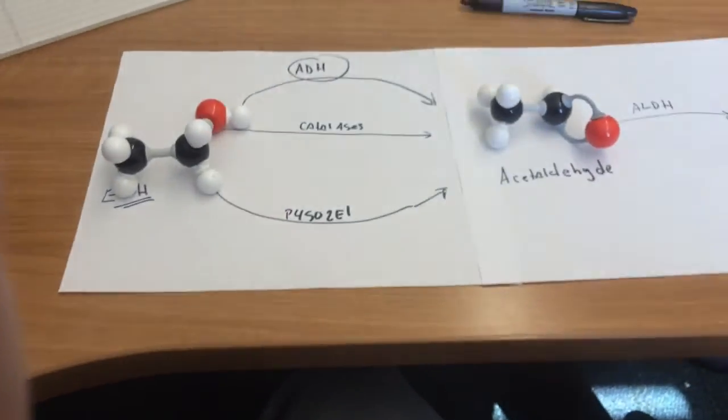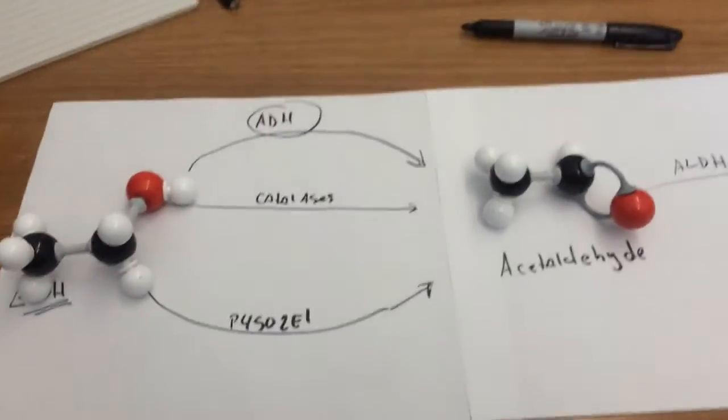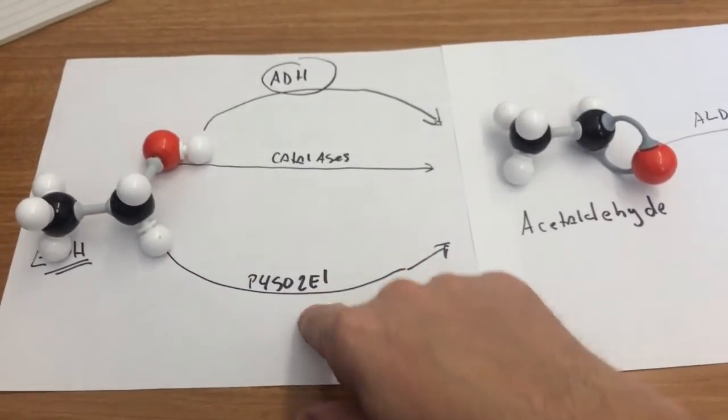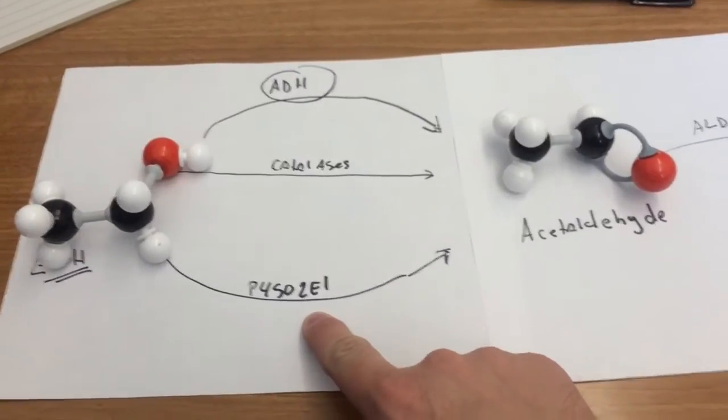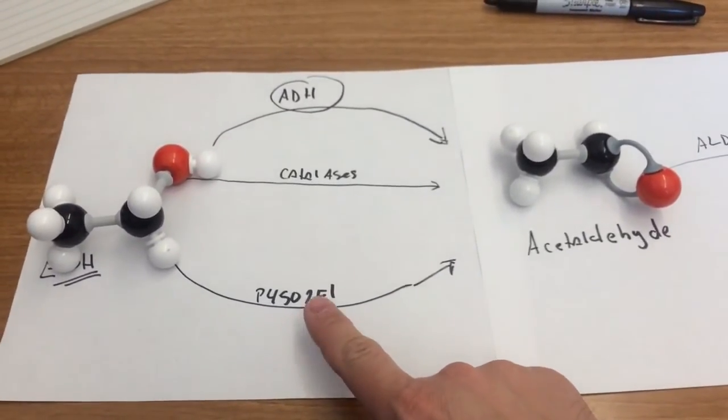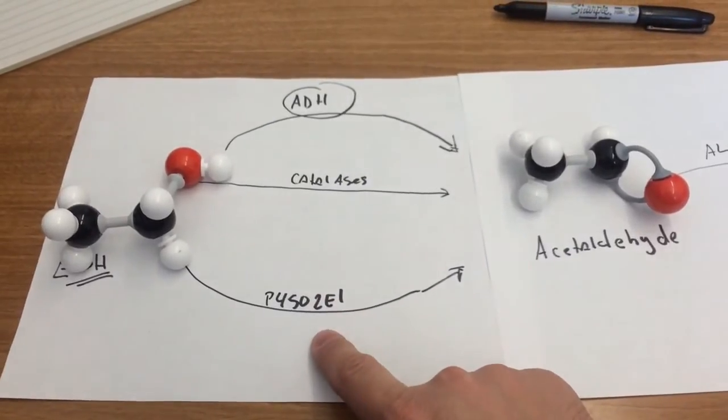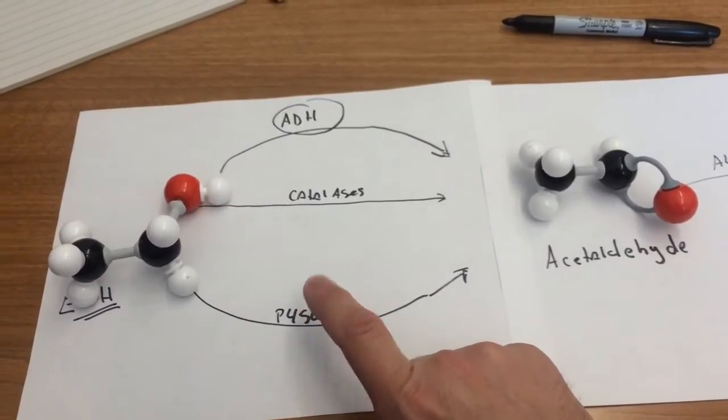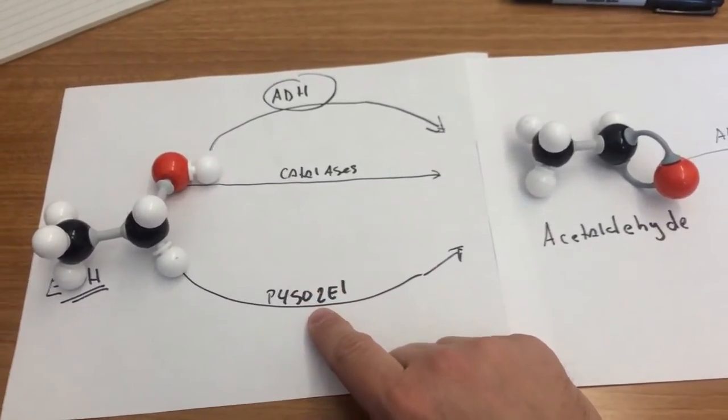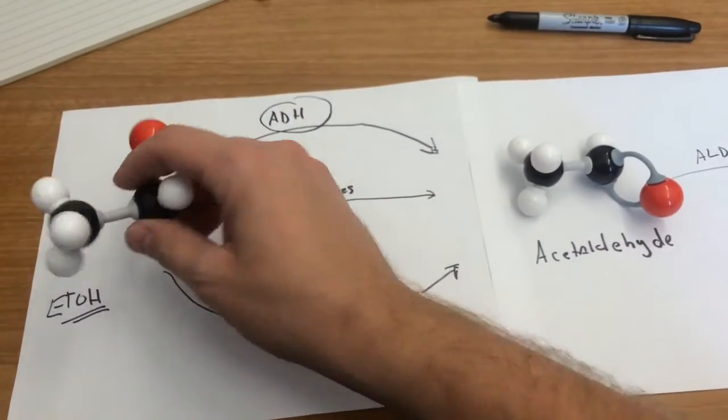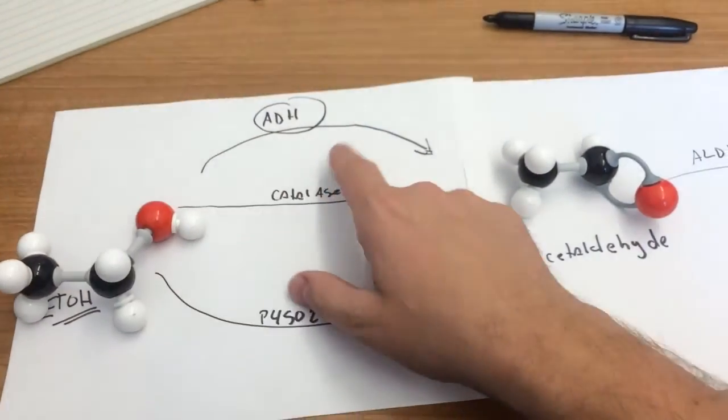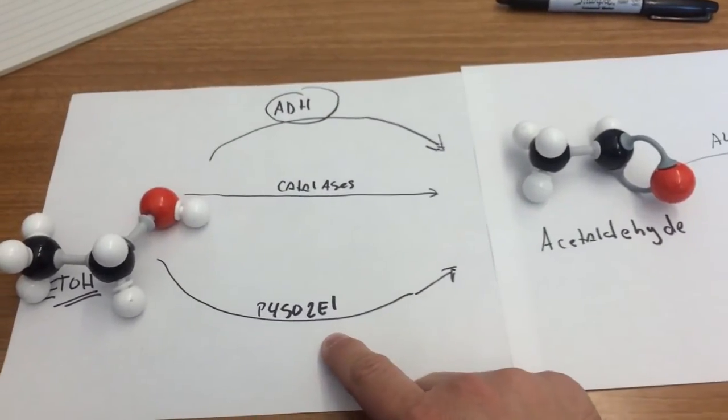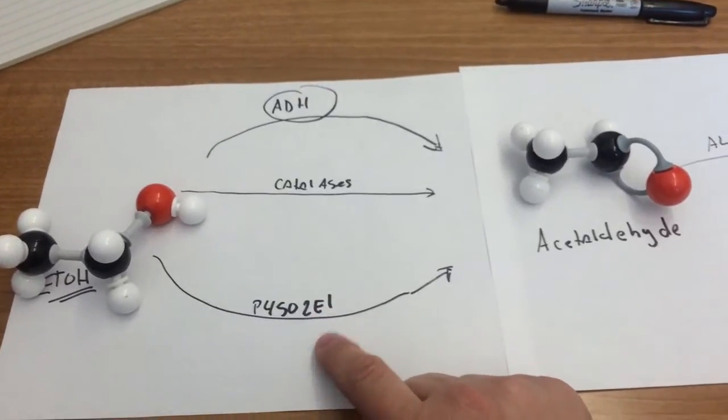A thing to note is that ethanol, chronic use of ethanol can induce, can cause enzyme induction here, P452E1 induction. So, people that are chronic alcoholics or have more chronic exposure to ethanol are going to have higher levels and higher activity of P452E1 enzymes. And so, they will be, to some extent, be able to metabolize this more efficiently. However, the major pathway does not change, the alcohol dehydrogenase. It's this relatively minor pathway that sees enzyme induction.